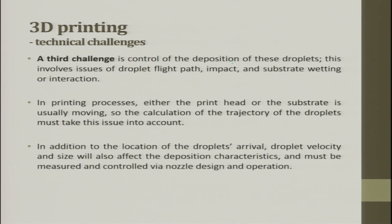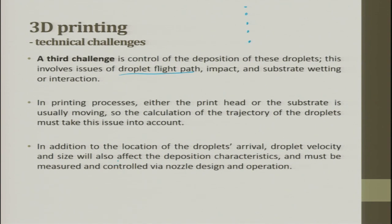A third challenge is controlled deposition of the droplets, involving issues of droplet flight path, impact, and substrate wetting. When the droplet falls from a certain height, how does it fall and how does it interact? In the printing process, either the printing head or the substrate is usually moving, so the calculation of the trajectory of the droplets must take this into account. The droplet is falling while the head is moving — like a plane dropping a bomb — so instead of falling straight down, it may take a curved path.